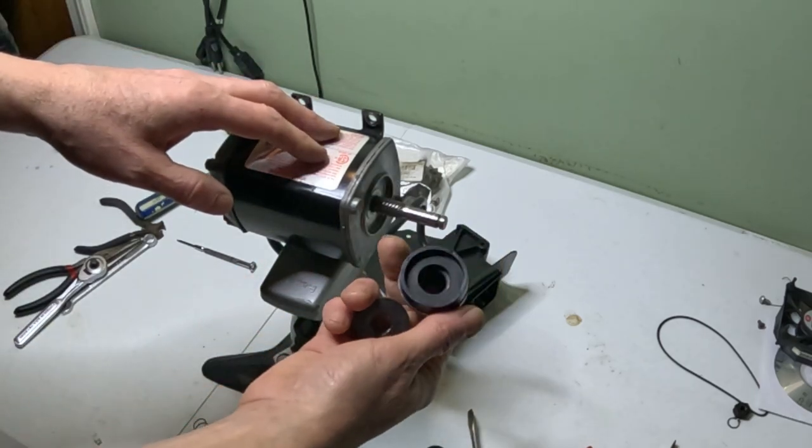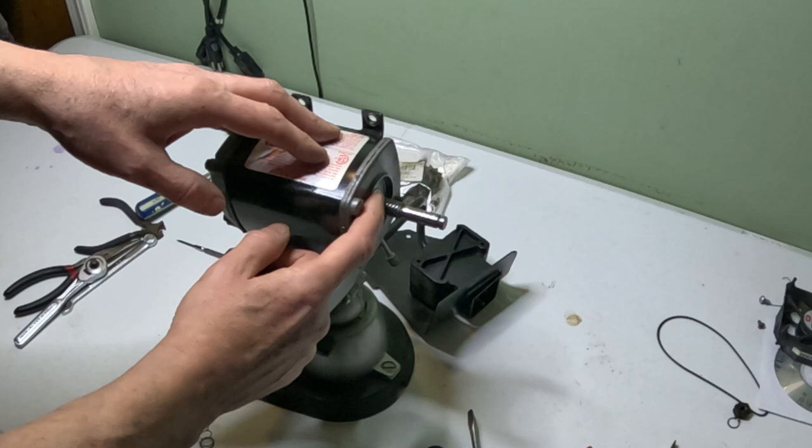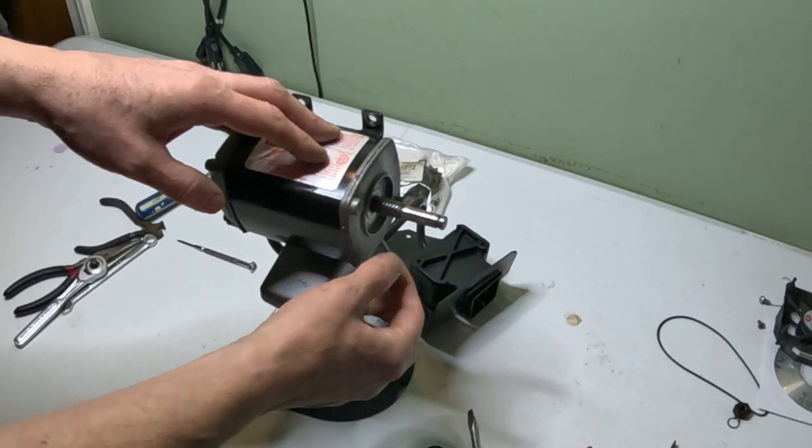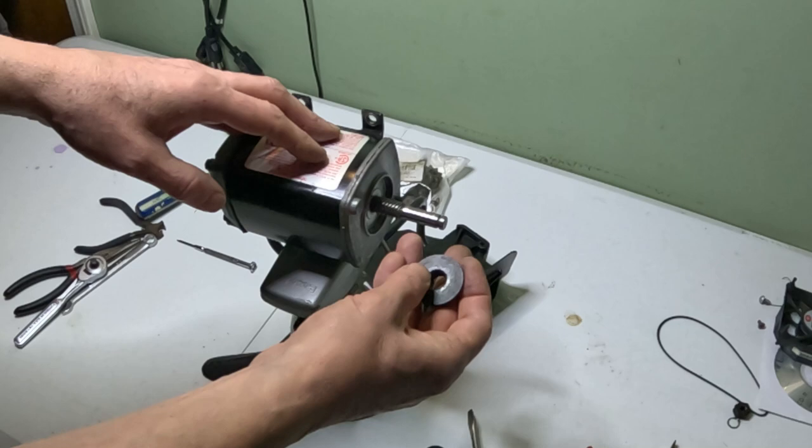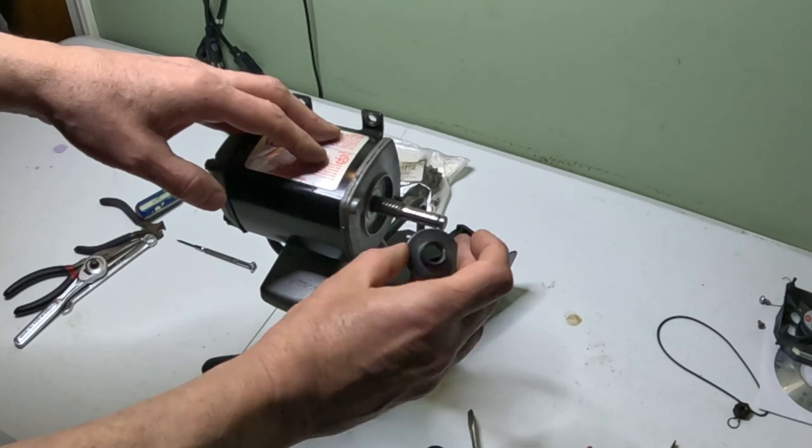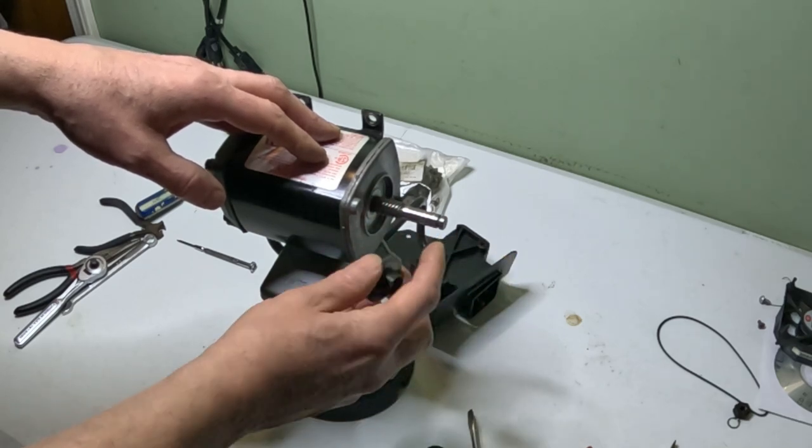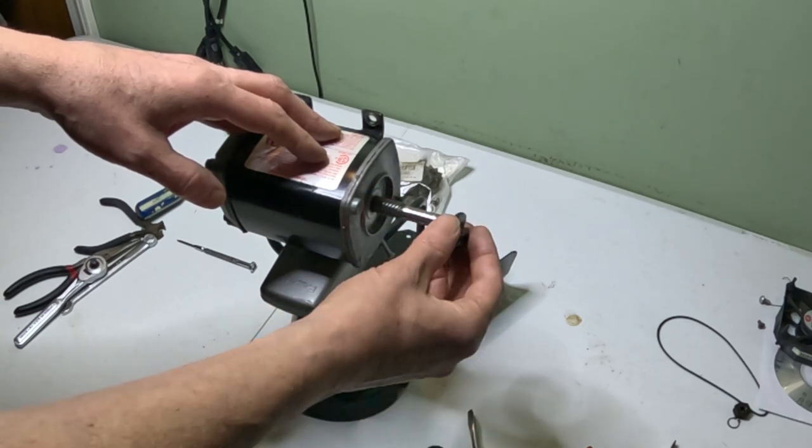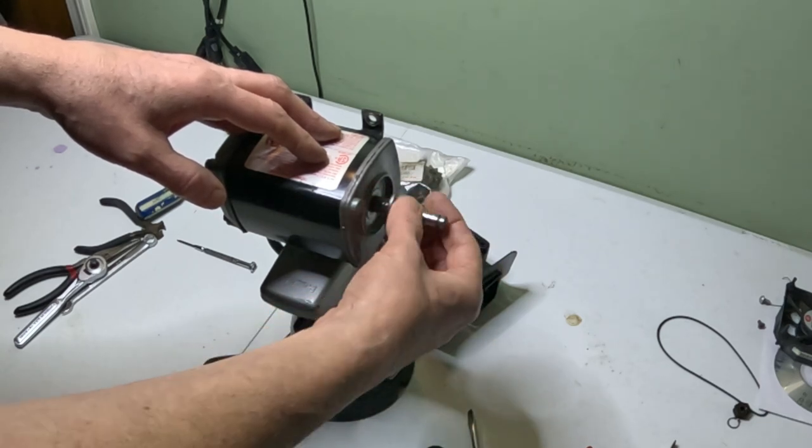We're going to put this thing back together. I'm just going to put a little bit of three-in-one oil on the worm gear. I'm not going to go crazy with the oil because like I said, it's just going to slip. It's natural to think we can just put a bunch of grease on this, but in this case, if you do that, more than likely it's going to slip.